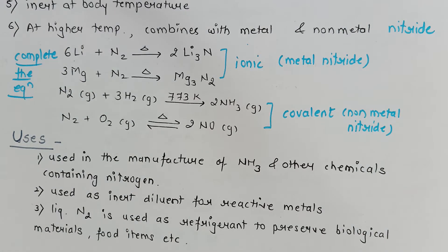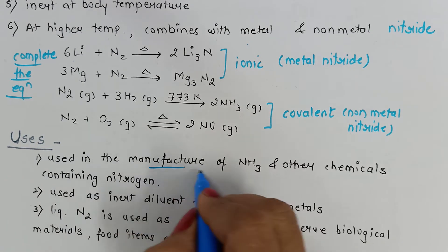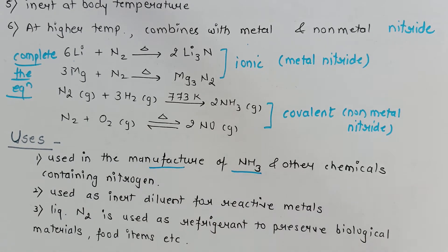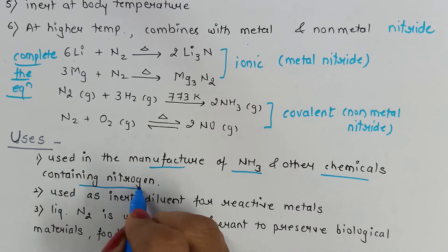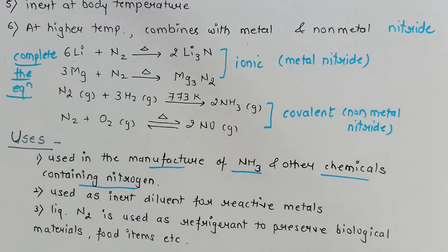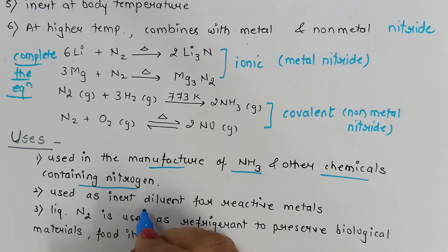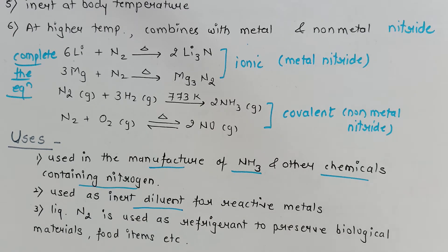Nitrogen has a variety of uses. It is used in the manufacture of ammonia as well as other nitrogen-containing chemicals. Since nitrogen is inert in nature, it is used as an inert diluent for reactive metals, because reactive metals' reactions are difficult to control and nitrogen's inert nature helps control these reactions.